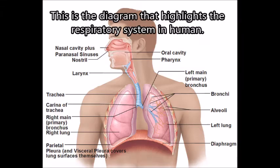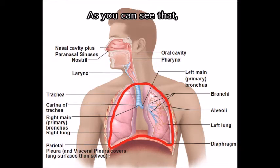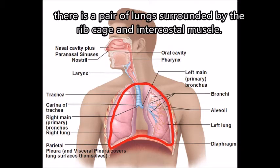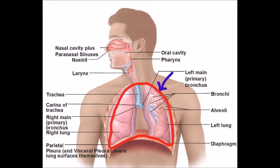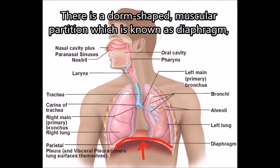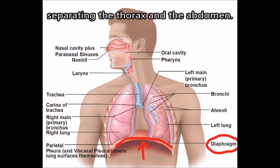This is the diagram that highlights the respiratory system in humans. As you can see, there is a pair of lungs surrounded by the ribcage and intercostal muscles. There is a dome-shaped muscular partition known as the diaphragm, separating the thorax and the abdomen.